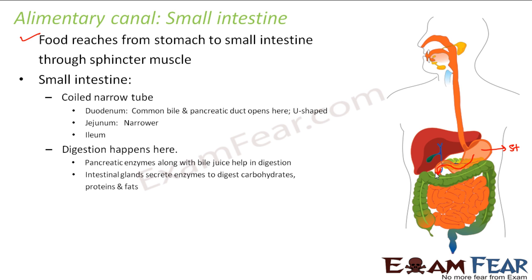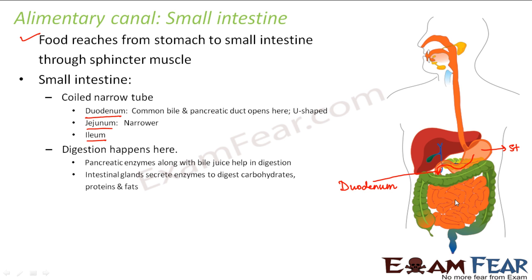The small intestine is a very much coiled tube-like structure. It is divided into three parts: duodenum, jejunum, and ileum. The duodenum is the upper part, followed by the jejunum, and the lowermost part is the ileum.